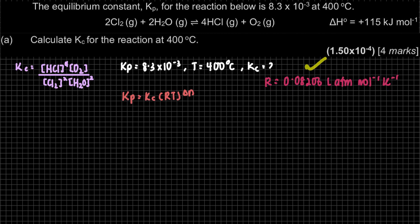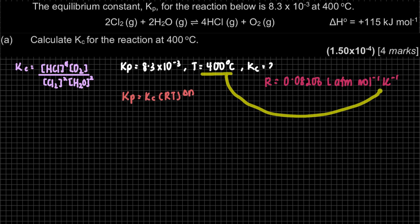I like to write the unit as well so you know what units should be used for the other measurements. T stands for temperature, which is given here. Based on the R unit, our temperature must be in Kelvin. To convert from degrees Celsius to Kelvin, we add 273.15.